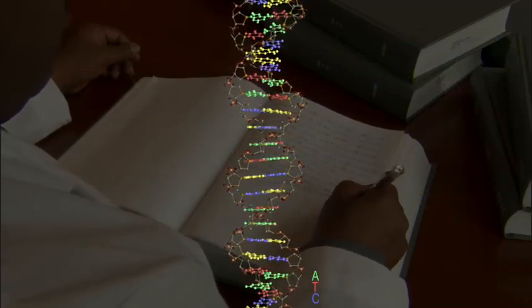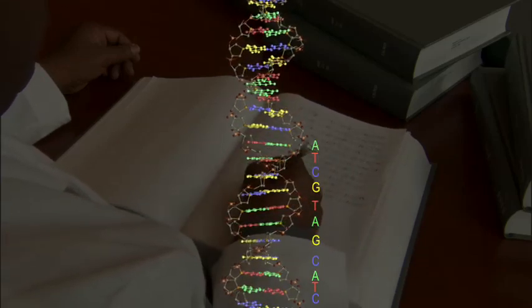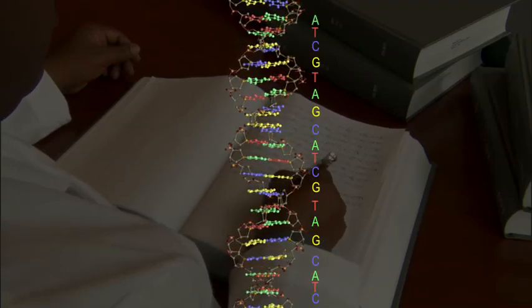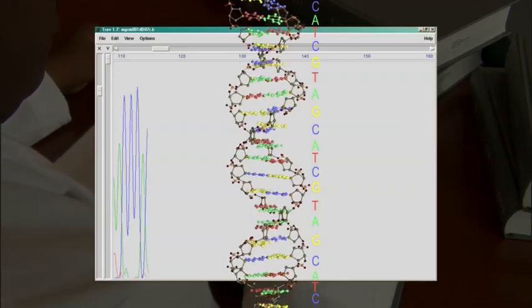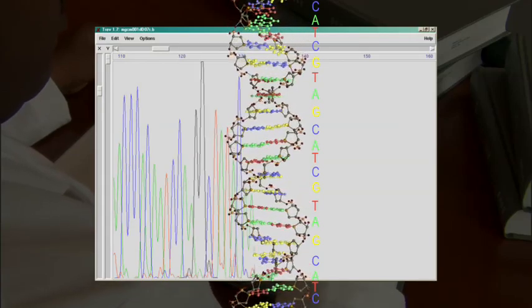Step by step, and three billion letters long, this is the formula for a human being. The existence of this tiny code written molecule by molecule inside each of our cells is a remarkable discovery all by itself.